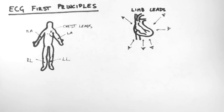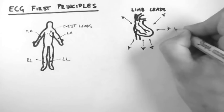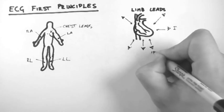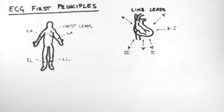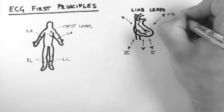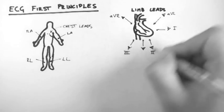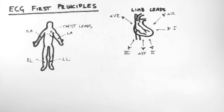And each of these leads has a name. This is lead 1, this is lead 2, this is lead 3, and the others are called AVL, AVR and AVF. This stands for augmented vector left, right and foot.